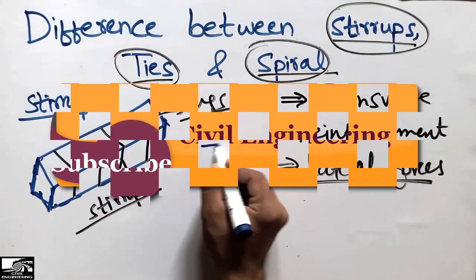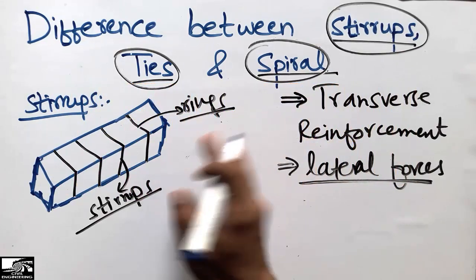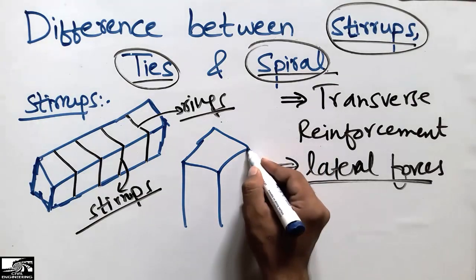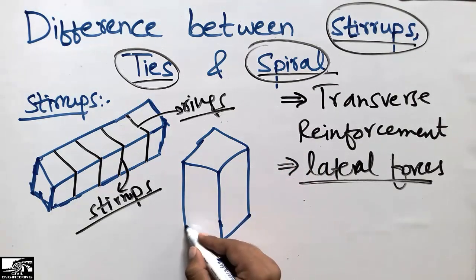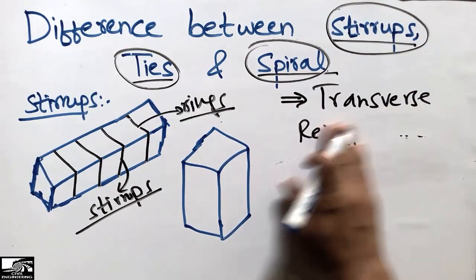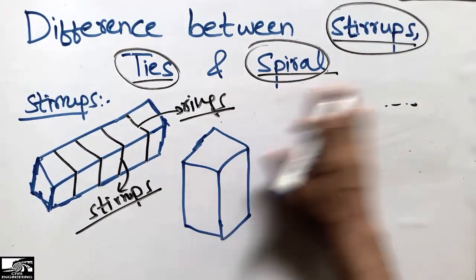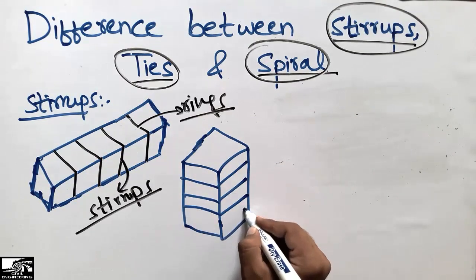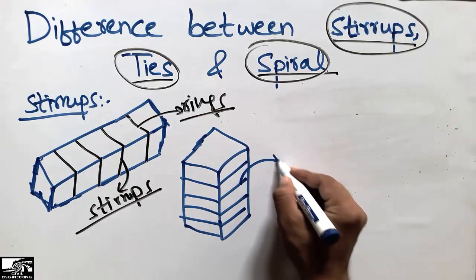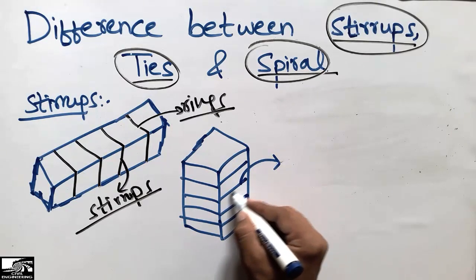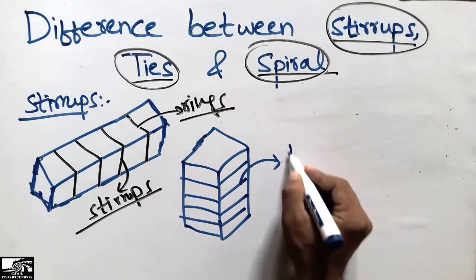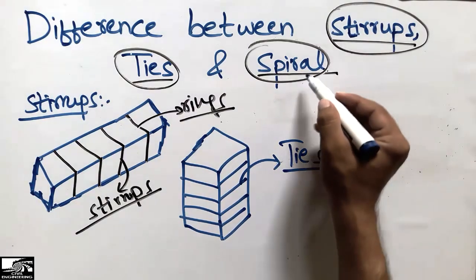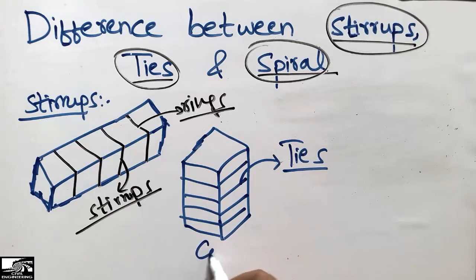While in the case of columns — specifically rectangular or square columns — we use a different name. In a square or rectangular column, the transverse reinforcement is called ties. The rings that laborers refer to are technically called ties in civil engineering when used in rectangular or square columns.